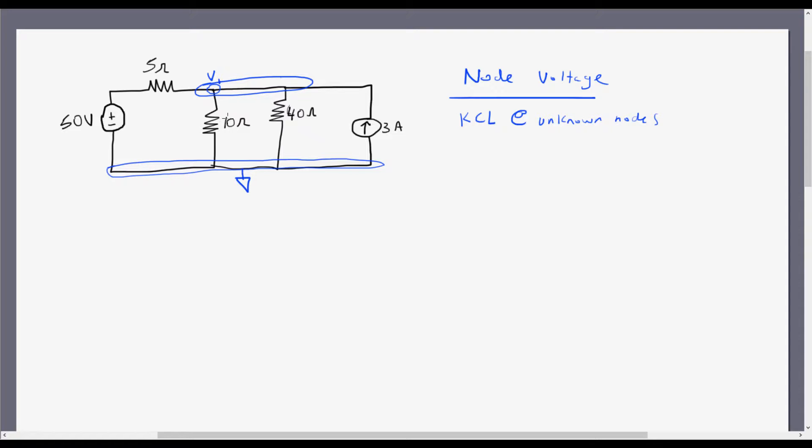Anyways, if you're familiar with that, just ignore all that, but we're going to take node voltage at V1, or KCL.